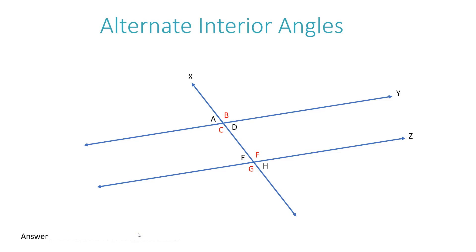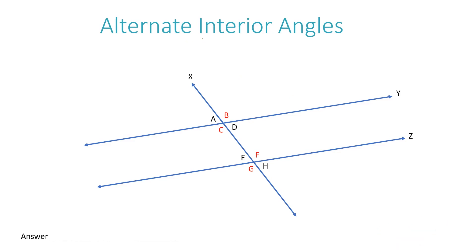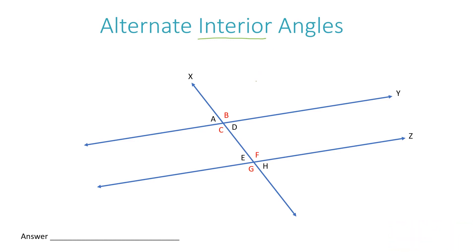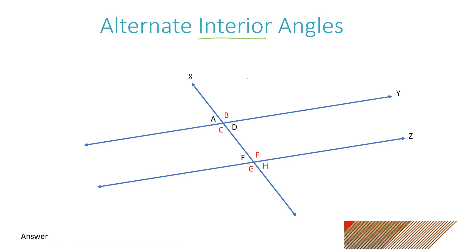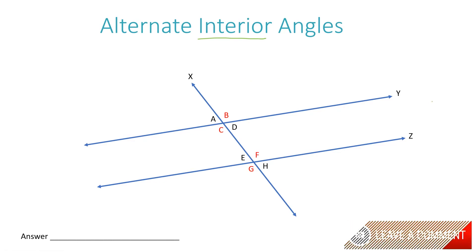Now let's take a look at alternate interior angles. Whenever you see the word interior or exterior in the title of your angle type, it's giving you precise information about where to find those angles — referring to an area in relationship to your parallel lines. Interior means everything that falls in between the two parallel lines. If something were exterior, it would be above the top line or below the bottom line.